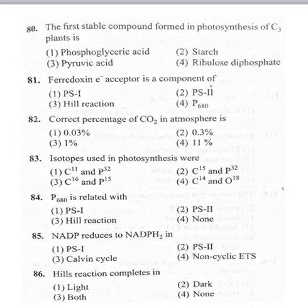Calvin discovered the C3 cycle while working with Chlorella. He used two different isotopes: C14 and O18, for carbon and oxygen. Since carbohydrates and oxygen are the products of photosynthesis, C14 and O18 were used. Correct answer is option 4: C14 and O18.